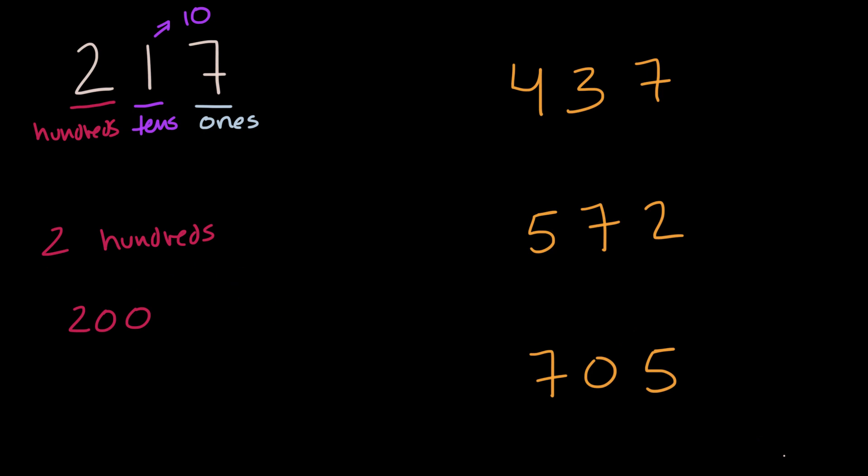All right, now let's work through this together. So let's start with this top number. In this number, the seven is in the ones place. So that seven really just represents seven ones, which is still just seven. So this seven does not represent 70.